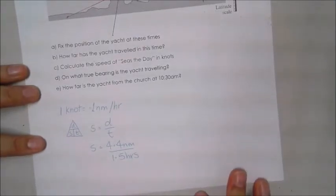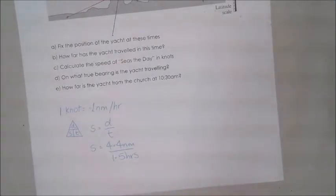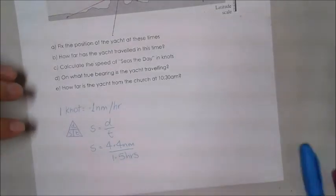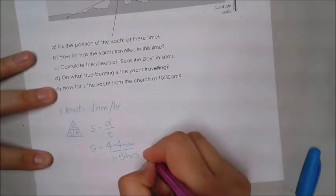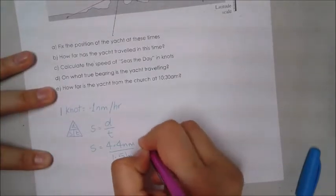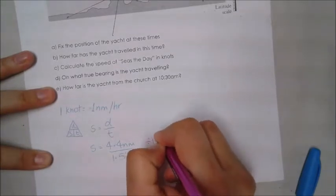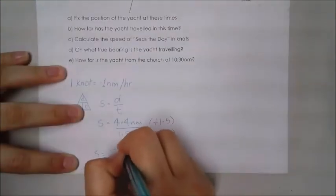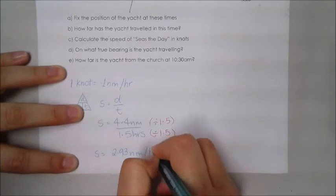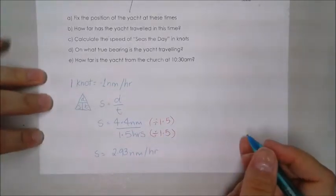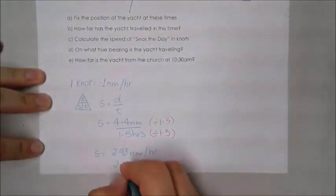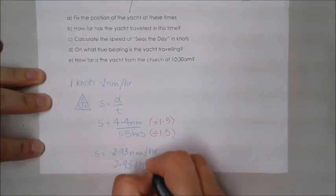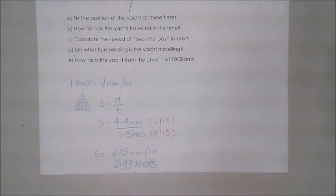So I have traveled 4.4 nautical miles in 1.5 hours. We need to convert that so it's one hour. So all we need to do is divide both by 1.5, divide both sides, which gives me a speed of 2.93 nautical miles per hour, or 2.93 knots.